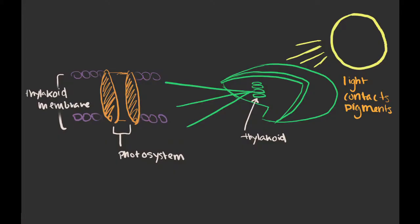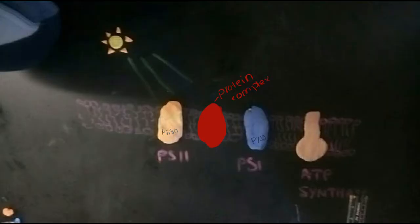The light-dependent reactions occur in the thylakoid membrane. Energy is absorbed by photosystems in order to excite the electron. Each photosystem is accompanied with a special pair. Photosystem 1 has P700, and photosystem 2 has P680. First light is absorbed by photosystem 2 to excite the P680 and the electron within it.